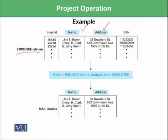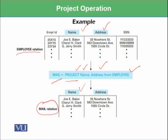We have made a new relation with the name 'mail'. Instead of writing 'select', we have written 'project' and specified name and address — these are the two columns we are projecting from the employee relation into the mail relation. This will select all of the tuples but only the selected columns of name and address, since we have not used any select operation here.